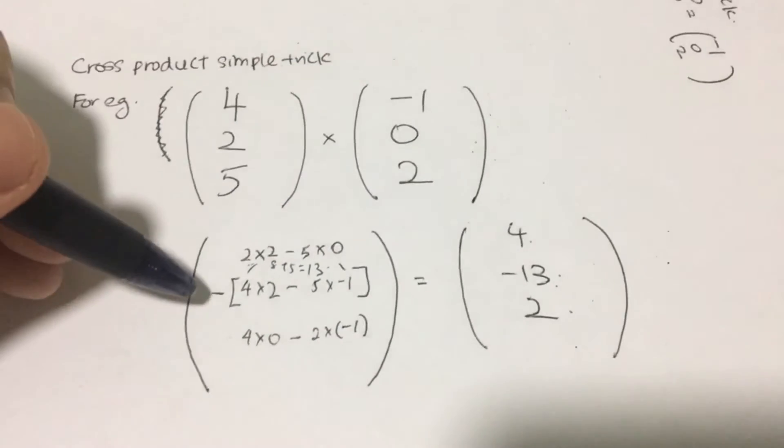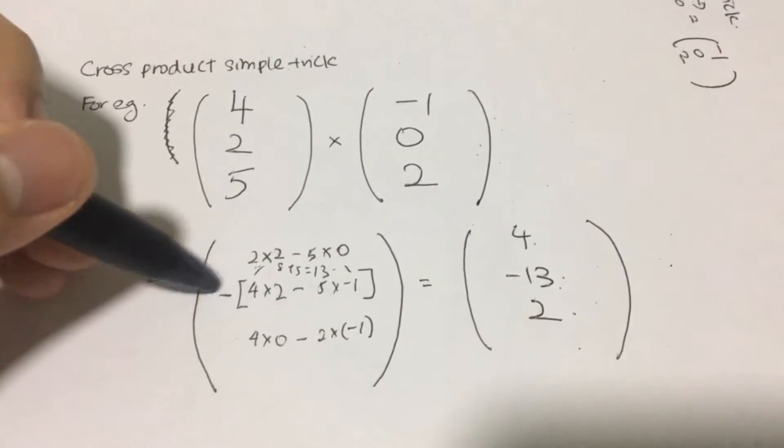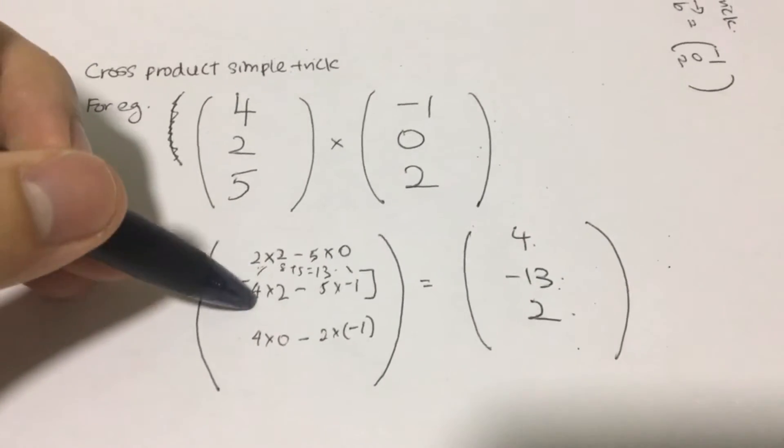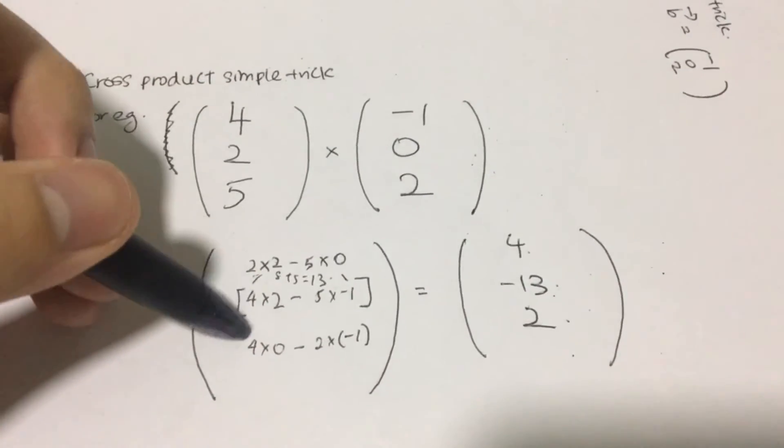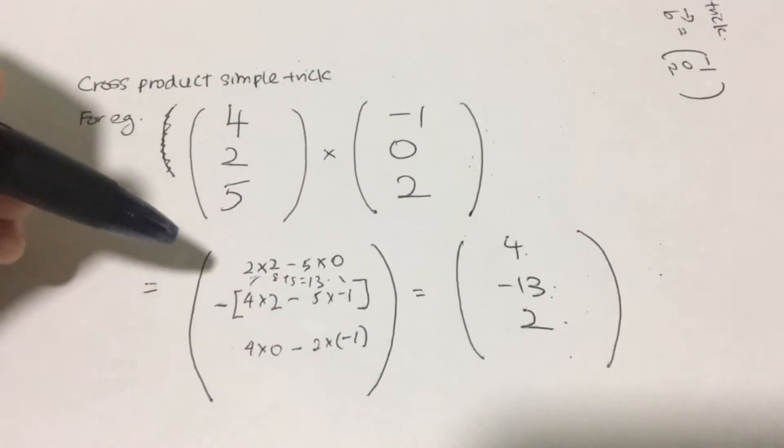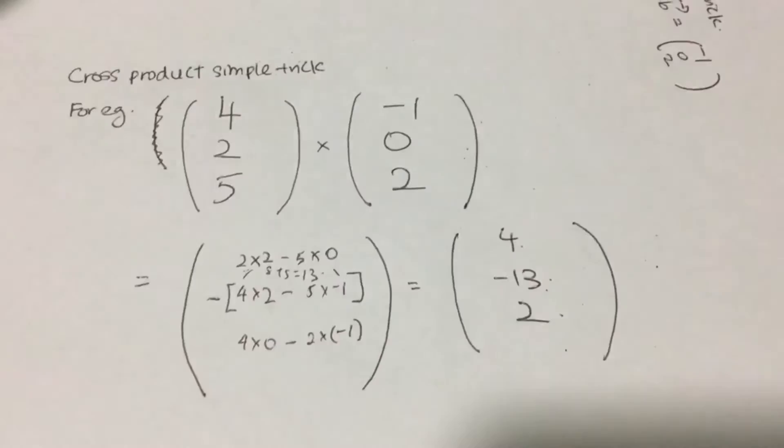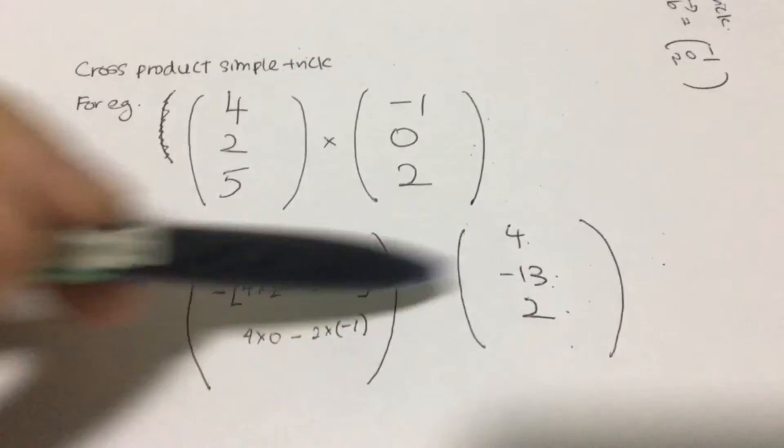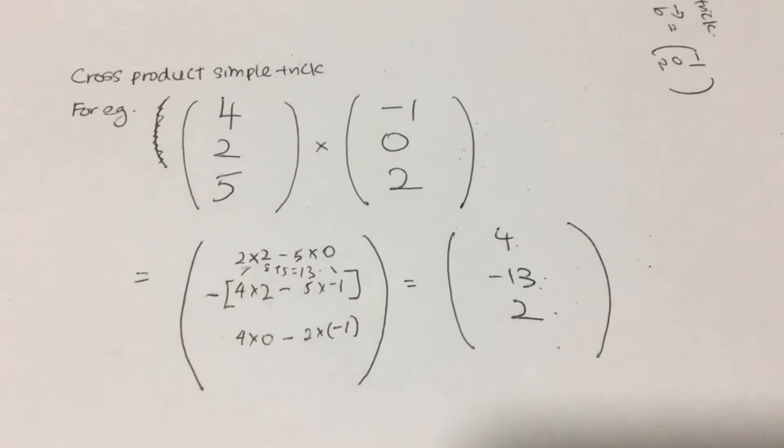And of course, don't forget, last but not least, you have to put a negative sign in your answer to the second row, which is the y representative. And last but not least, compute and get the answer, which is 4, negative 13, and 2.